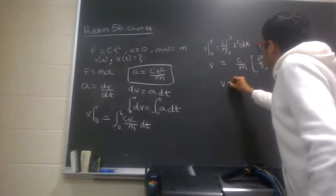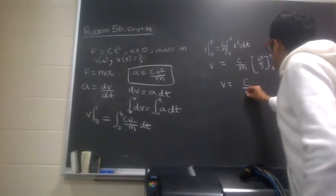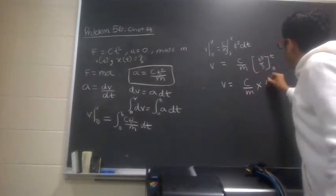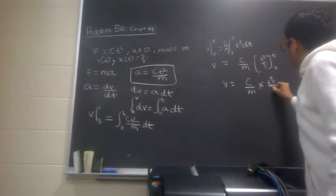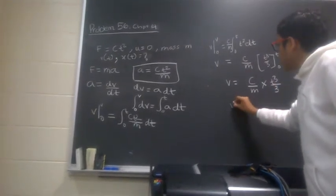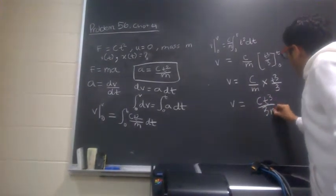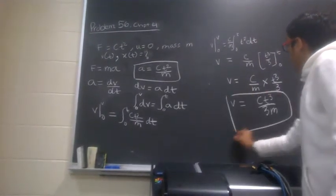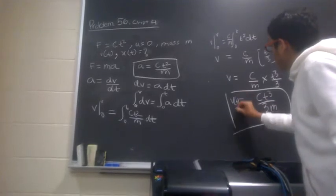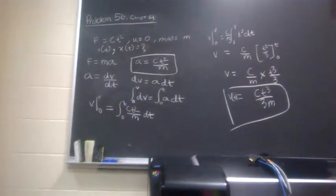Therefore, we get v as a function of t, c over m, into t cubed over 3. And so hence, v is equal to ct cubed over 3m. And there you have it, v as a function of t. That's it?